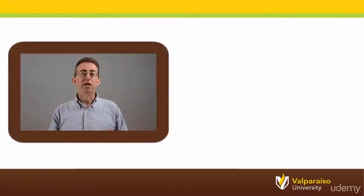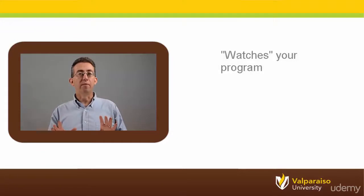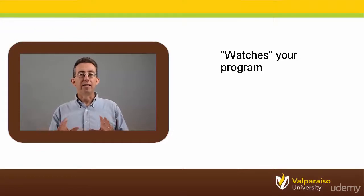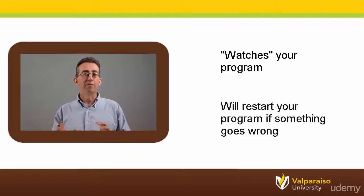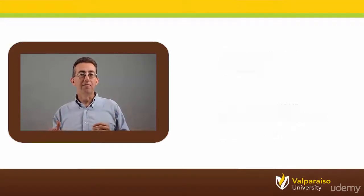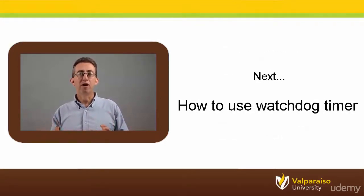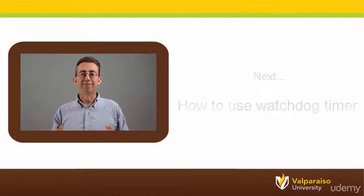In summary, the watchdog timer peripheral will watch your program. It keeps a count to make sure that periodically the program is petting the peripheral to let the watchdog know that everything is okay. Up next we'll take a look at how your program interfaces with this new watchdog timer peripheral.